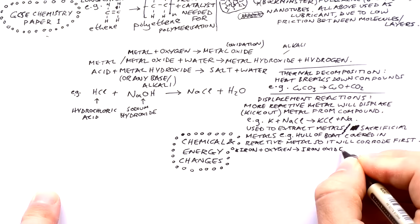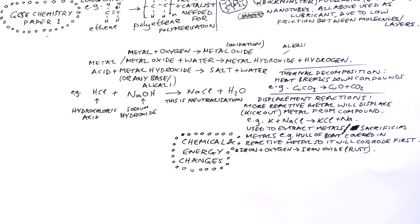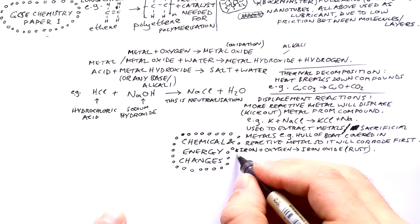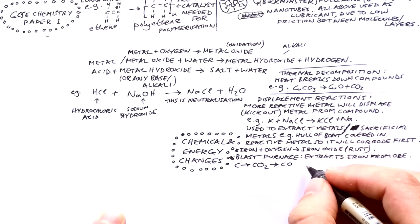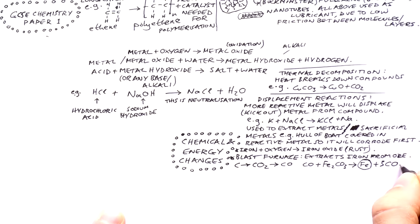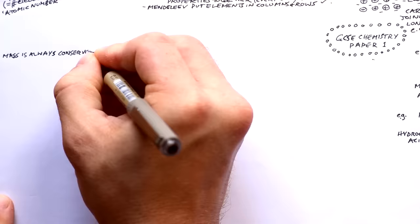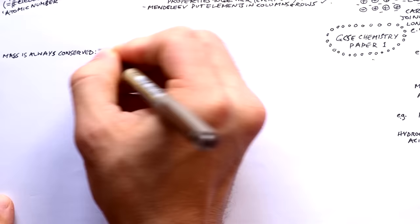When iron reacts with oxygen or water it makes iron oxide — that's rust. Other metals can form oxides too, like aluminium oxide and copper oxide (which is green — that's why the Statue of Liberty looks green), but we only call iron oxide 'rust.' To extract iron from iron ore we use a blast furnace: coke (carbon) reacts with oxygen to make CO₂, which then forms carbon monoxide, and carbon monoxide is reacted with iron carbonate to leave pure iron.